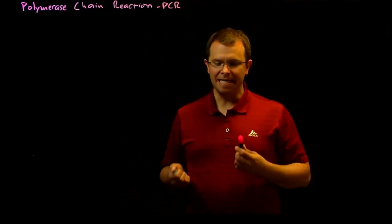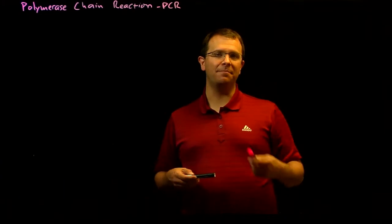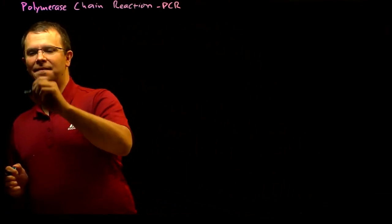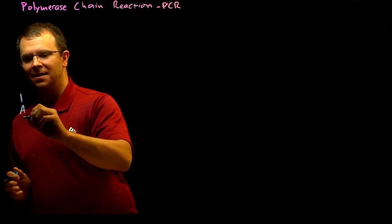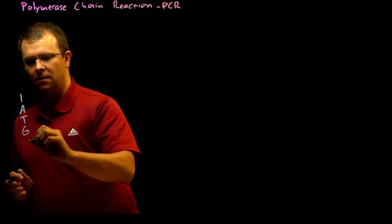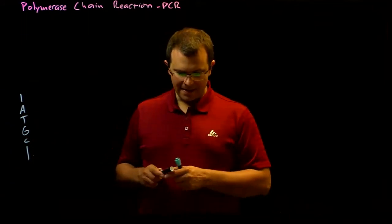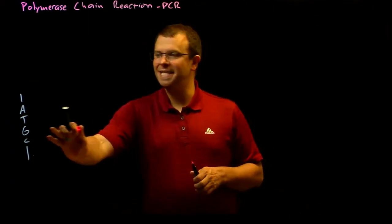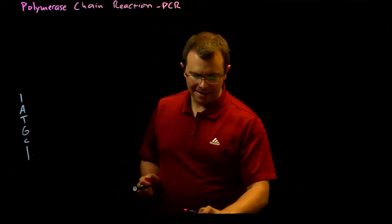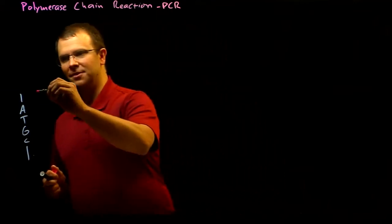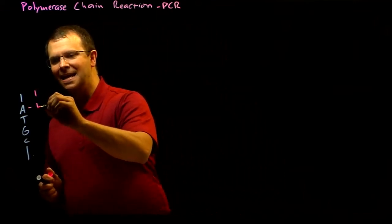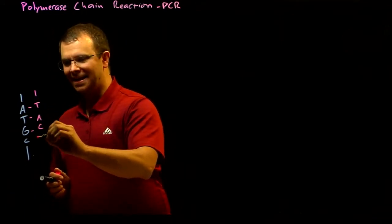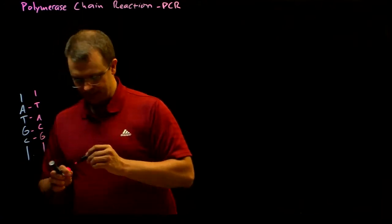So PCR is basically DNA replication in a test tube. And so remember that if I have a single strand of DNA, an enzyme called a DNA polymerase can synthesize the other strand using the base pairing rules. So where it sees an A, it adds a T and vice versa. And where it sees a G, it adds a C and vice versa.